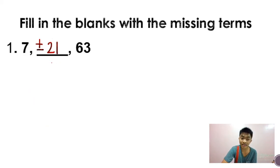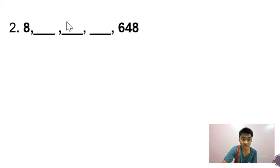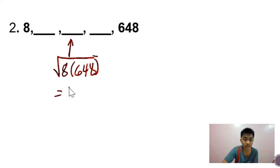Let's have another example. Since may middle term ulit dito, we can do that method we used on a previous problem. So para makuha yung middle term, we get the square root of the product of the two given terms. So that is 8 times 648. At kung ika-calculate mo yan, ang lalabas na sagot ay 72. So that is positive or negative 72. Pero sige na nga, let's use positive for now. Pero actually, there can be two possible answers.